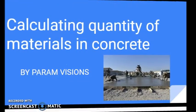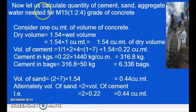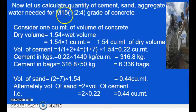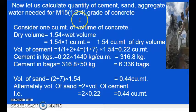Today we will learn how to calculate the quantity of materials in concrete. Let us calculate the quantity of cement, sand, aggregate, and water needed for M15 — that is 1:2:4 grade of concrete.